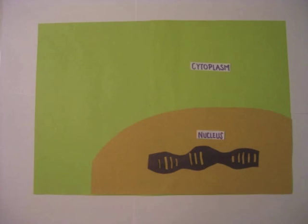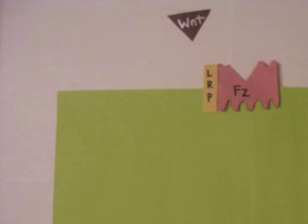The Wnt ligand attaches itself to the receptor frizzled, which must also be attached to the co-receptor LRP. This union activates the connector disheveled.